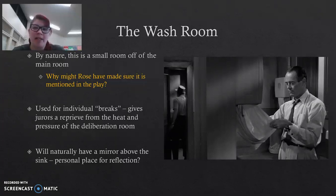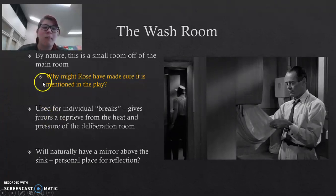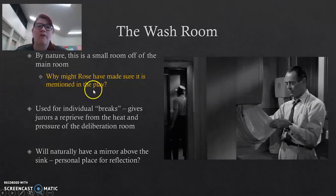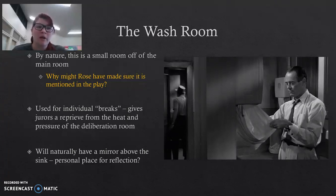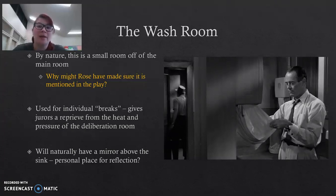This changes people's perspectives on the actual deliberation at that point. Your last question for this session is: why might Rose have made sure that the small washroom is mentioned in the play? That is your opinion on it, and I would like a few sentences on that because we are going to start off talking about that question in the next lesson. Make sure you've got down all of those notes from the previous video and from this video, and make sure those questions are answered. At the bottom of your page, if you have any other questions about anything in this video, write them down and we will go through them in class.